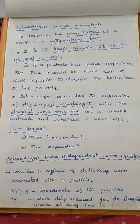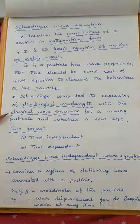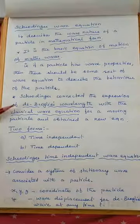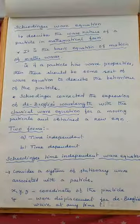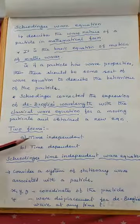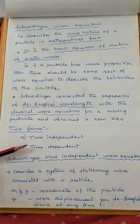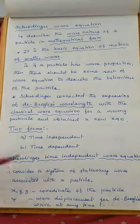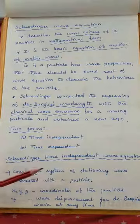He derived an expression considering de Broglie's wavelength as well as the classical wave equation. There might be some discrepancies with the classical wave equation, so with that equation, he used the concept of de Broglie's wavelength and derived two new forms of Schrödinger's equation: the time-independent and the time-dependent forms. In this lecture, we will derive an expression for the time-independent wave equation.